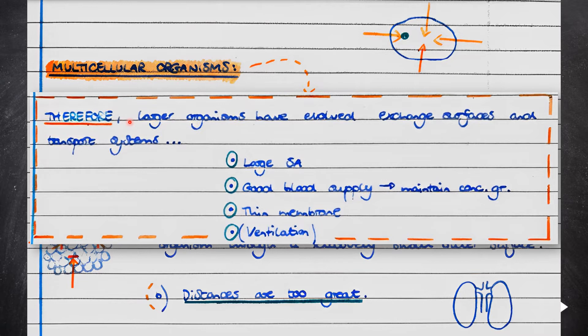Therefore, larger organisms have evolved exchange surfaces and transport systems, which are features such as a large surface area, a good blood supply to maintain a favourable concentration gradient for the diffusion of substances, a thin membrane, and also ventilation in some organisms such as humans. All of this maintains a high rate of transport of substances into and out of the organism.